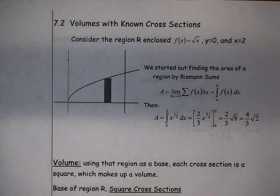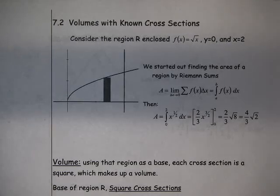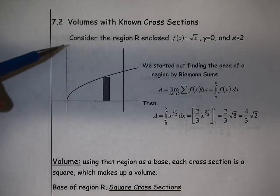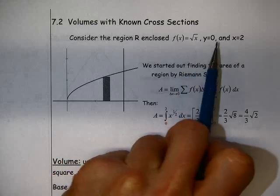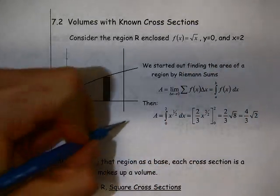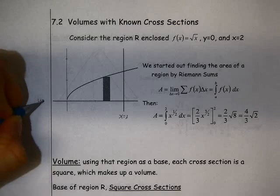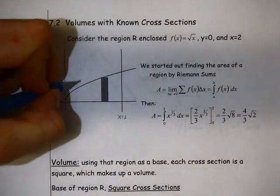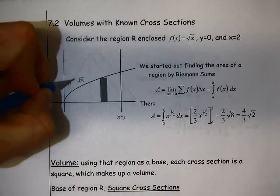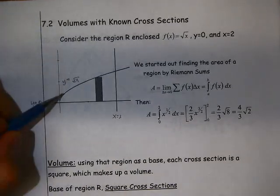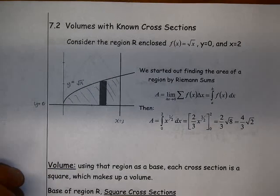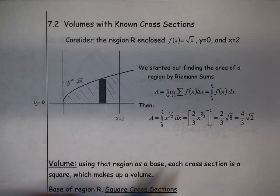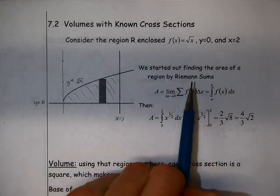We're going to start off section 7.2, and we're going to have a little flashback to chapter 4. Consider this region enclosed by f(x) equals the square root of x, y equals 0, and x equals 2. If we want to know the area enclosed by those three functions, we use an integral — but remember, really what we did was we used a Riemann sum.